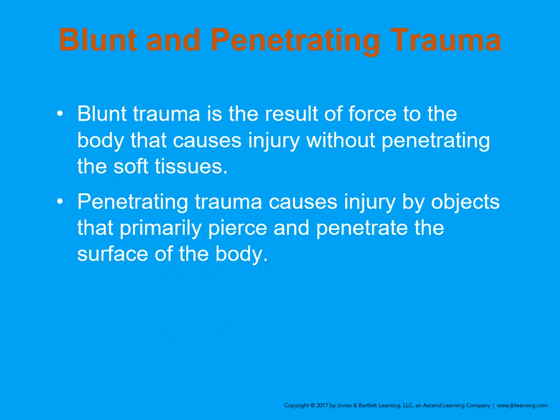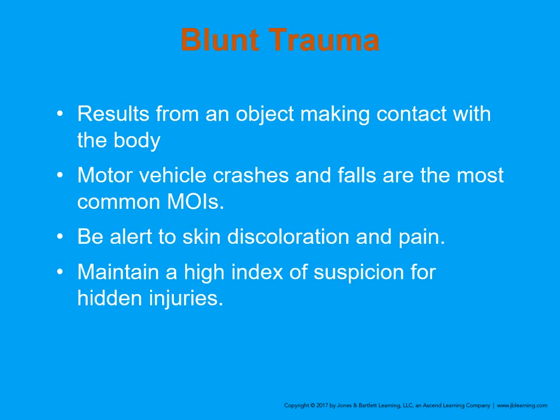Blunt force trauma is just what it says — something blunt hit or came in contact with the human being. It causes injury without penetrating the soft tissue, whereas penetrating trauma pokes through the skin, pierces or penetrates the surface of the body, and can cause significantly more damage. In blunt trauma, an object making contact with the body can cause a bruise or bleeding underneath the skin. We have to think about the structures underneath — the organs and what potential damage they may have been subjected to. Motor vehicle collisions and falls are the most common causes of blunt force trauma.